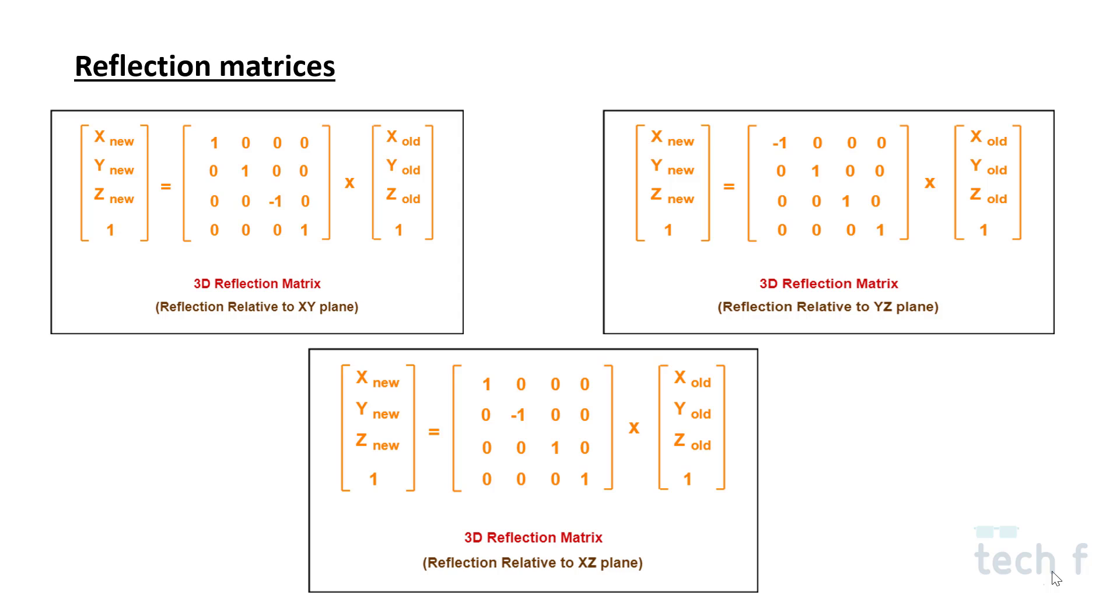The reflection matrix: when a particular point or figure has to be reflected with respect to an axis, or we can call it a plane—if it is the XY plane, that means we are reflecting about the Z axis. We have to provide a minus sign for the 3rd row, 3rd column value. If it is about the YZ plane or X axis, we have to provide a minus sign for the 1st row and 1st column, and similarly for the XZ plane or Y axis.